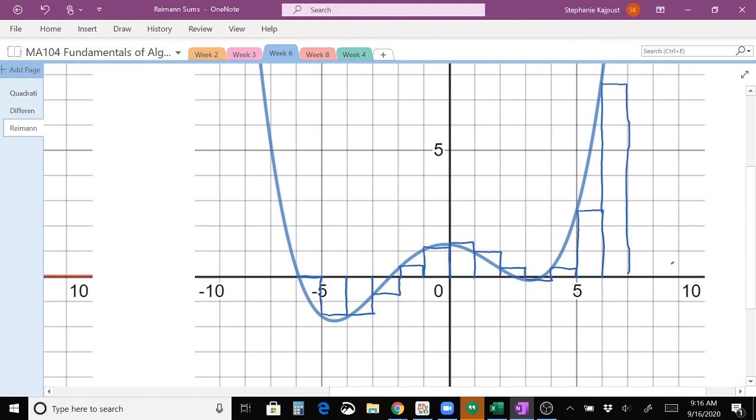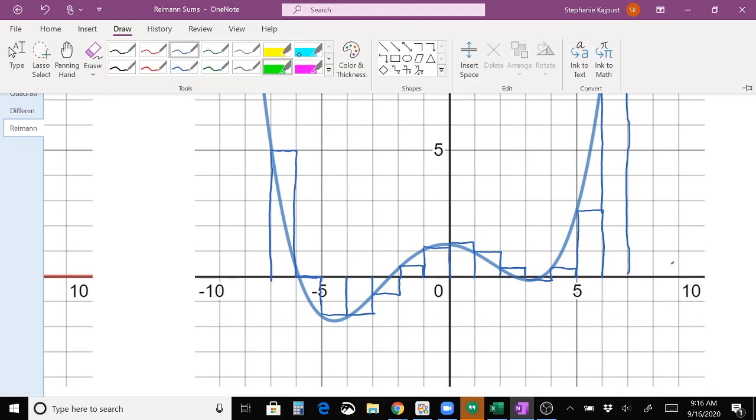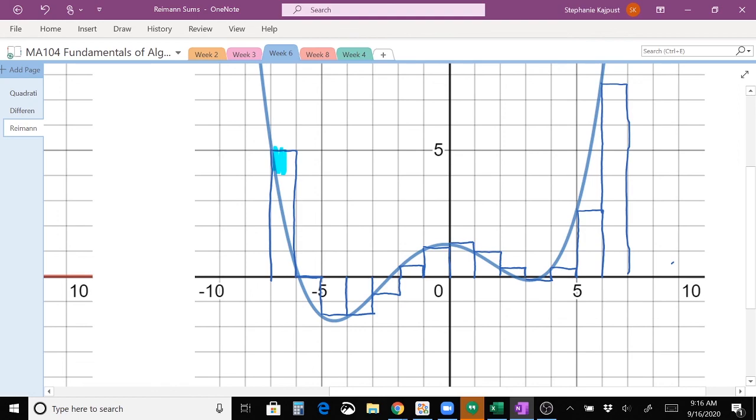So this would be a left sum. And if I wanted to continue a left sum, this box would be, this rectangle would be over here. And the next rectangle is off the screen. So let me highlight these so that you can actually kind of see the rectangles.